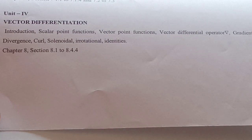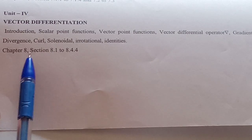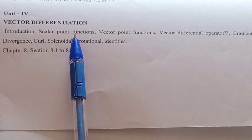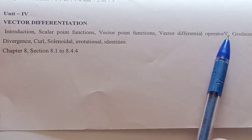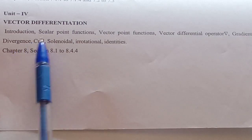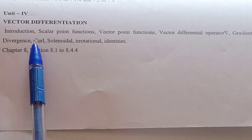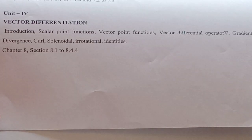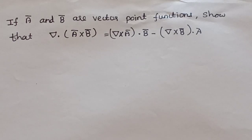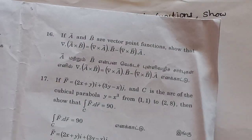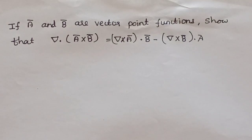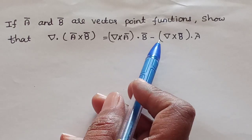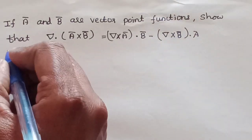In the fourth unit, we cover vector differentiation of vector point functions and scalar point functions. The vector differential operator del is introduced. We will look at a question from November 22: if a vector and b vector are vector point functions, show that del·(a×b) = (del×a)·b - (del×b)·a.